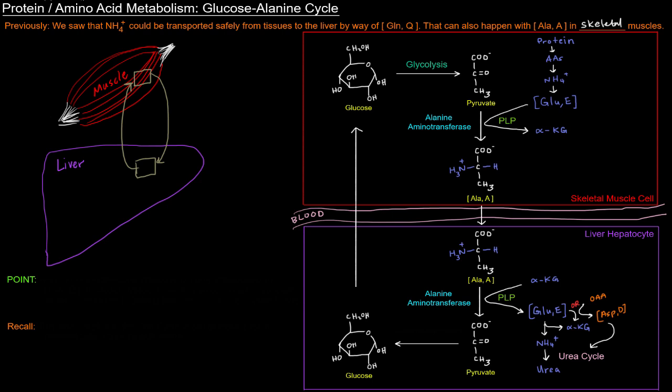Once we get that pyruvate, that pyruvate will undergo a transamination reaction catalyzed by alanine aminotransferase, and the reason it's named alanine aminotransferase is because it's going to turn that pyruvate into alanine, because alanine is the alpha amino acid counterpart to pyruvate being an alpha keto acid.